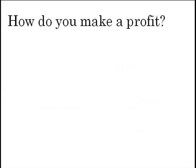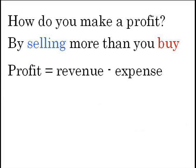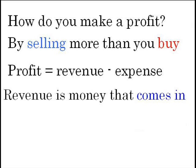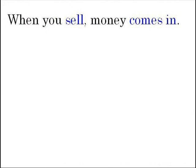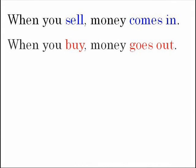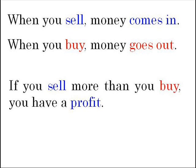How do you make a profit? By selling more than you buy. According to accounting, profit is defined as the difference between revenue and expenses. Revenue is money that comes in; expense is money that goes out. If more money comes in, you have a profit. If more money goes out, you have a loss. When you sell, money comes in. When you buy, money goes out. If you sell more than you buy, you have a profit.